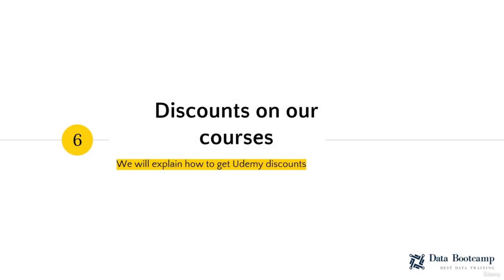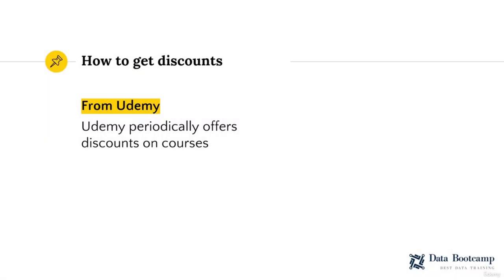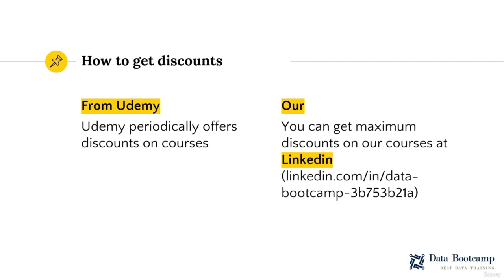Finally, let's talk about discounts on our courses. There are two ways to get discounts: one is through the Udemy platform, which periodically offers discounts on all courses. Another alternative is our LinkedIn network, where we post discounts from time to time. These discounts are the maximum allowed — you will be able to get our courses at the minimum price that the Udemy platform allows. To access our LinkedIn network, just search for data.bootcamp with the corresponding code. We recommend you follow us or add us to your contact network so that every time we publish discounts you can get the discount code.